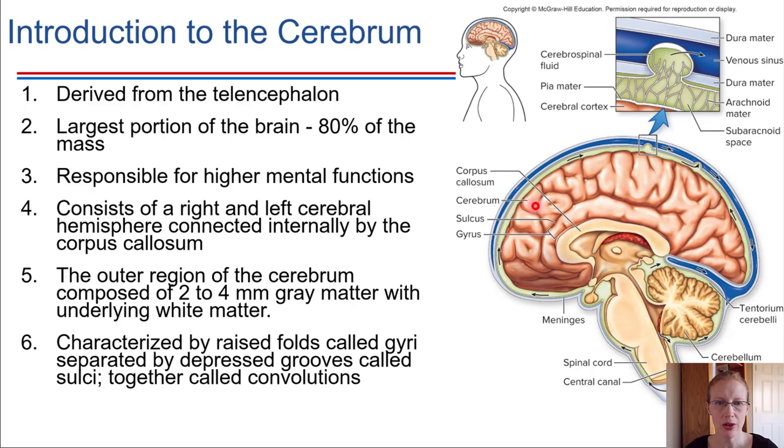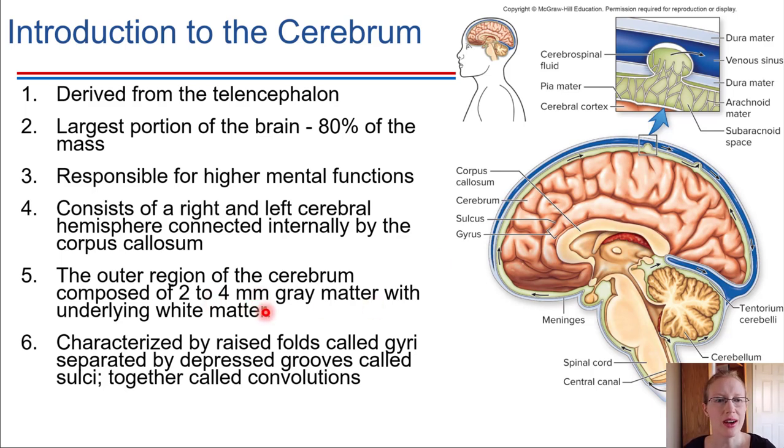Only about the outer two to four millimeters of the cerebrum is gray matter. The rest is white matter.